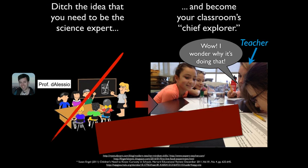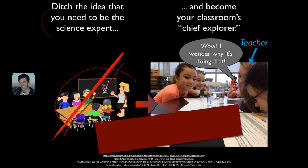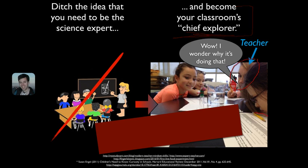To summarize the biggest shift in NGSS: our goal is to help students figure it out, not just learn about science, which means we can ditch the idea that we need to be a science expert. Students are charged with figuring stuff out on their own. This allows us to become our classroom's chief explorers. Teachers who exhibit curiosity themselves have students that ask more questions and explore more boldly — that's what research tells us, and that's the goal for our science instruction.